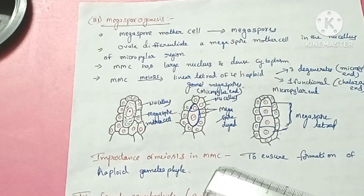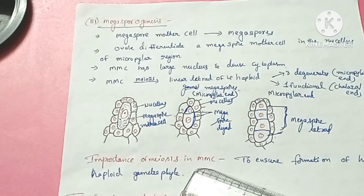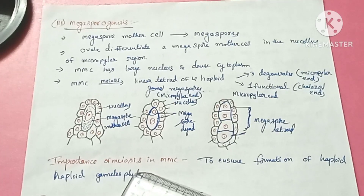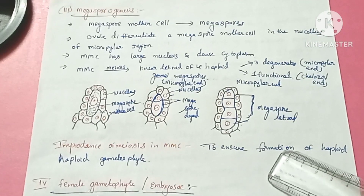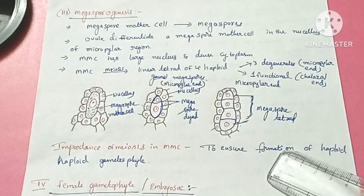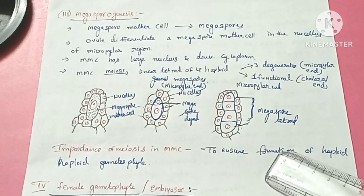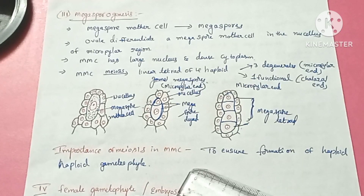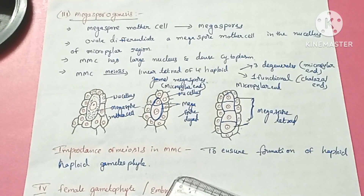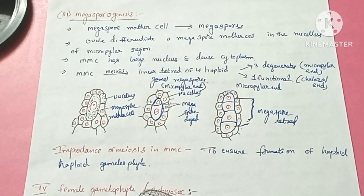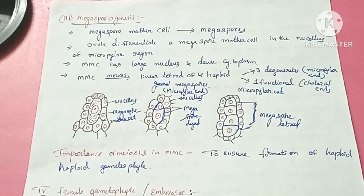The importance of meiosis in the megaspore mother cell is to ensure the formation of haploid gametophytes. Since the megaspore mother cell is in a diploid condition, it must undergo meiosis to produce haploid megaspores.